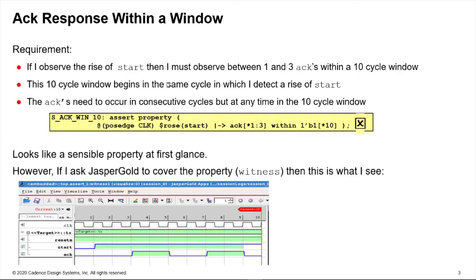So we're detecting the rose of start here and it says from the same cycle we've got a 10 cycle window. So our 10 cycle window is wanting B1, i.e. true, repeated for 10 consecutive cycles and within it we expect to see ack occur between one and three times. So given what we've just seen on the within property this seems a very sensible thing to write, but it will not do what you think it will do.